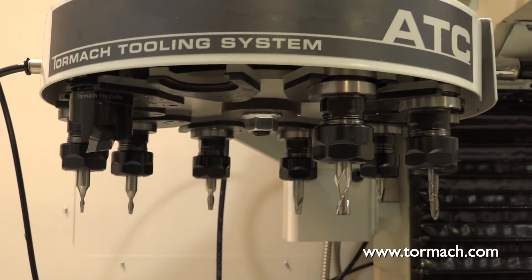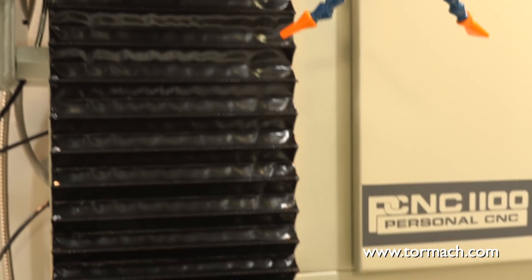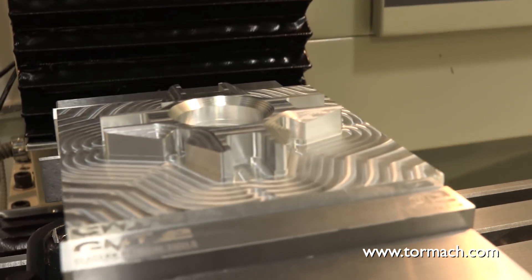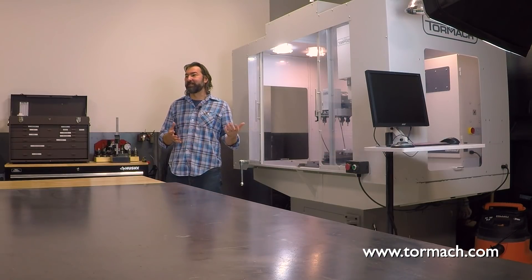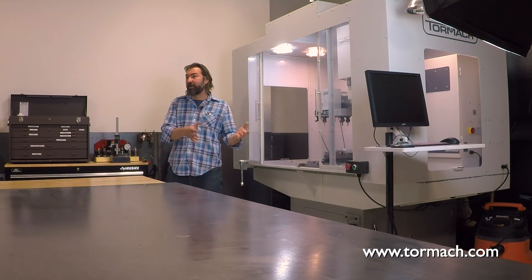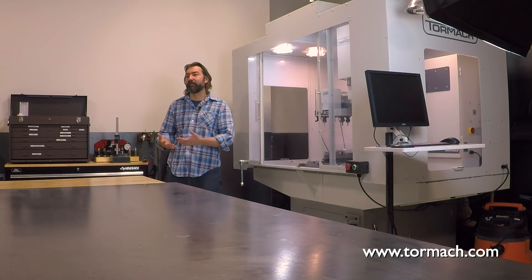What the 1100 has done for us is it's allowed us to circumvent all of these long lead times that we've seen with third-party machine shops. When we have a design that we want to get prototypes, sometimes we're waiting 12 to 14 weeks to get it, and that's tough on our clients. This machine allows us to very quickly make the part, realize what it looks like, test it right there, and it just speeds up the whole process.